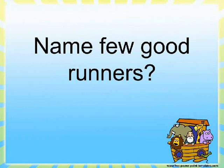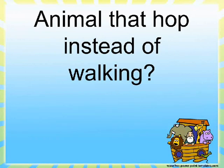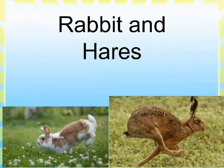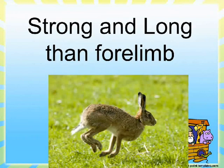Name a few good runners. Cheetah, horses, zebras, and foxes. Animals that hop instead of walking — rabbit and hares. How are the hindlimbs of a rabbit? They are strong and longer than the forelimb.